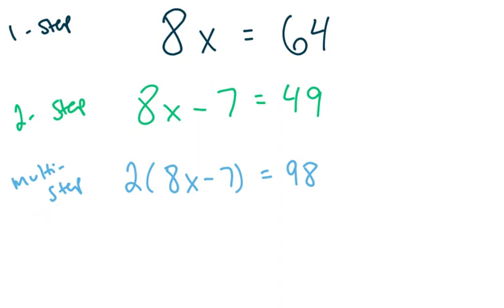The multi-step equations involved things like the distributive property. Sometimes we were distributing, we were dividing, we were combining like terms — doing all that on one side of the equation before we even started solving.